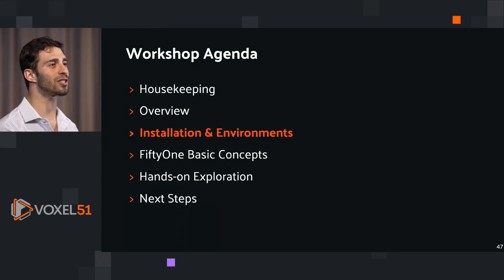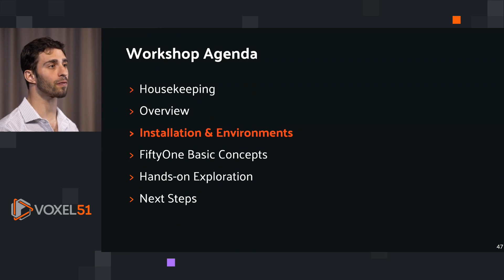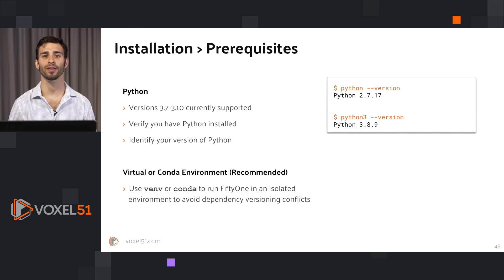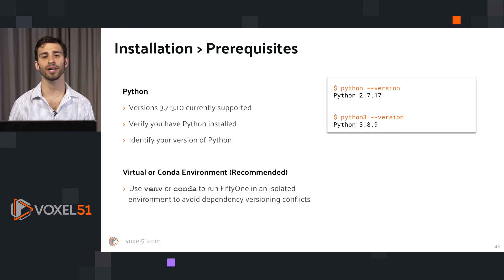Time to talk through installation and environments — let's get set up for success. If you've already installed FiftyOne, feel free to skip this part and move on to the next section. Some quick prerequisites before we install FiftyOne: we need a working installation of Python, and in particular Python 3.7 through 3.10, as those are the versions that FiftyOne supports.